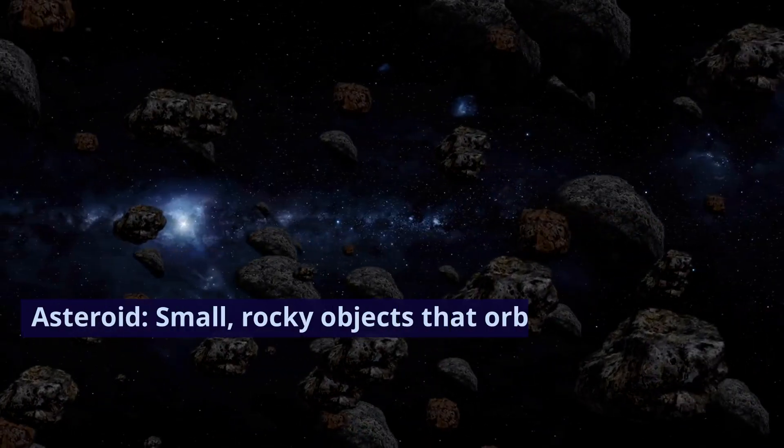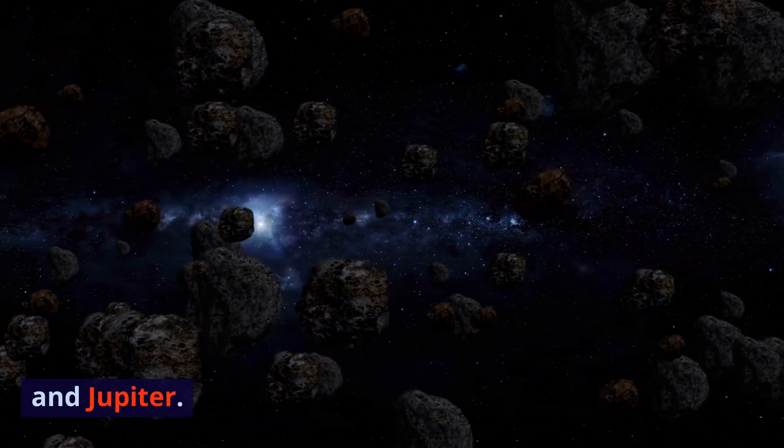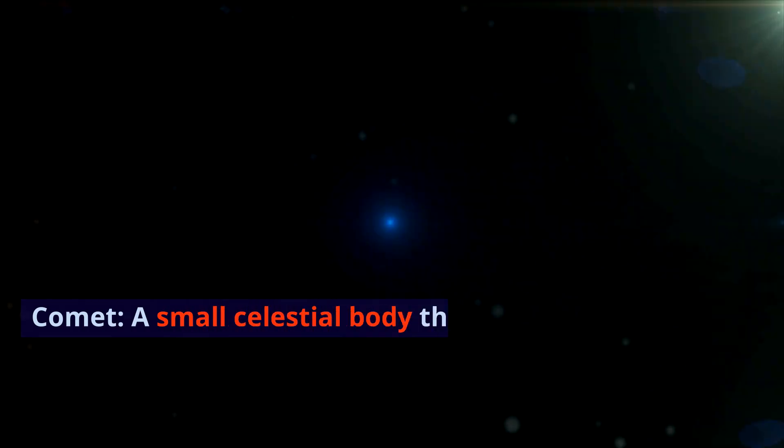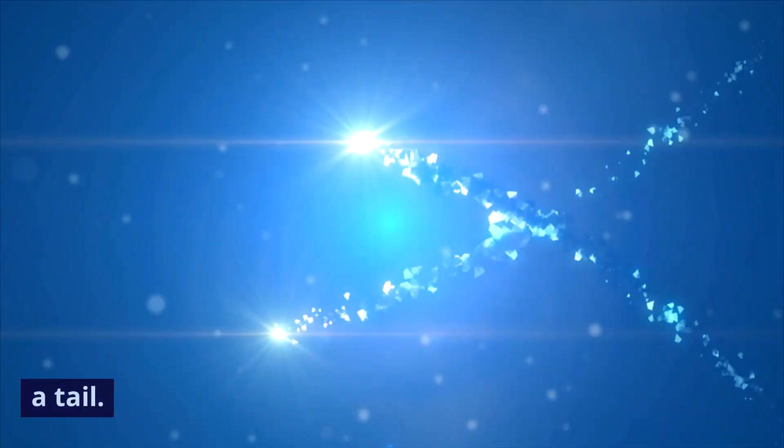Asteroid. A small, rocky object that orbits the Sun, mainly found in the asteroid belt between Mars and Jupiter. Comet. A small celestial body that orbits the Sun and develops a bright, fuzzy coma and sometimes a tail.